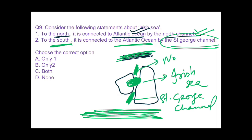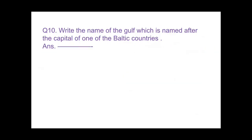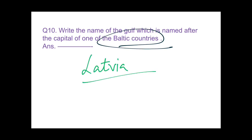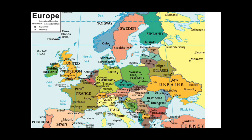Question 10: which gulf is named after the capital of one of the Baltic countries? The Baltic countries are Estonia, Latvia, and Lithuania. The answer is the Gulf of Riga, named after Riga, the capital of Latvia. On the map you can see Riga as the capital of Latvia, the Gulf of Riga, and the three Baltic countries — Estonia, Latvia, and Lithuania.